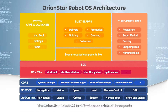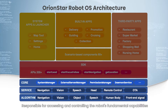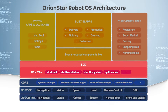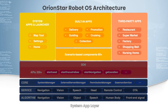The OrionStar Robot OS architecture consists of three parts: a core and service layer responsible for accessing and controlling the robot's fundamental capabilities; an SDK/API layer offering a comprehensive set of over 200 APIs; and a system app layer providing essential system service capabilities.